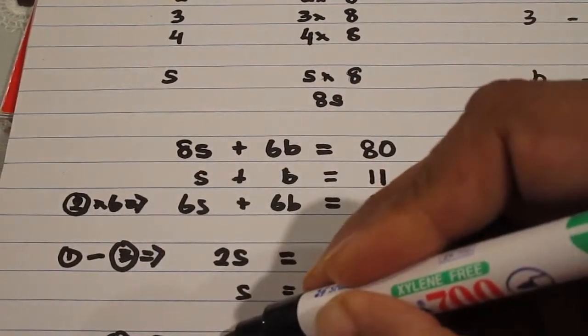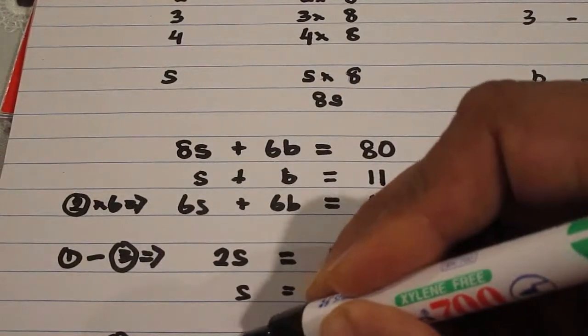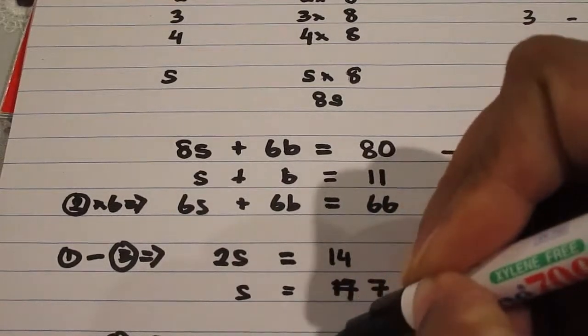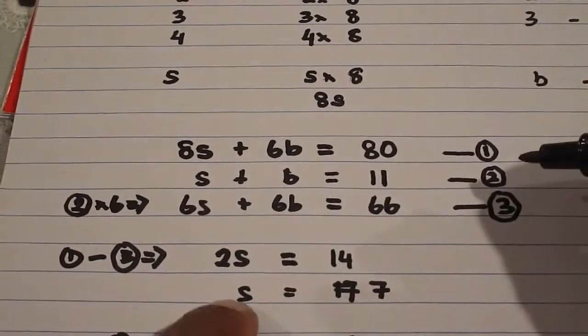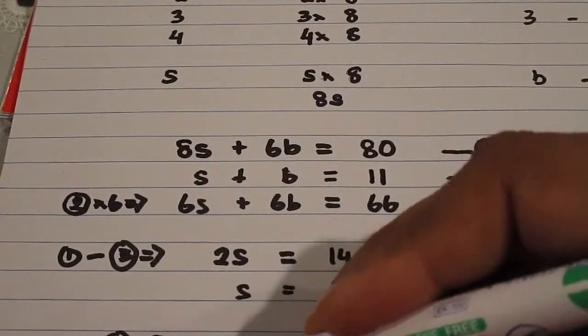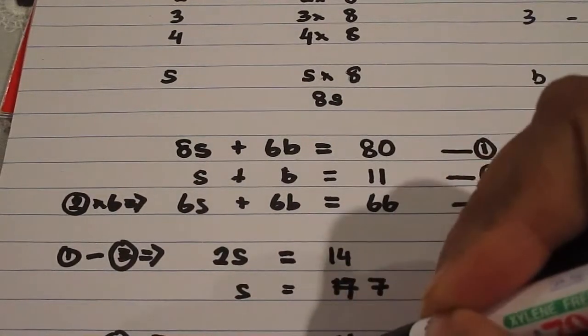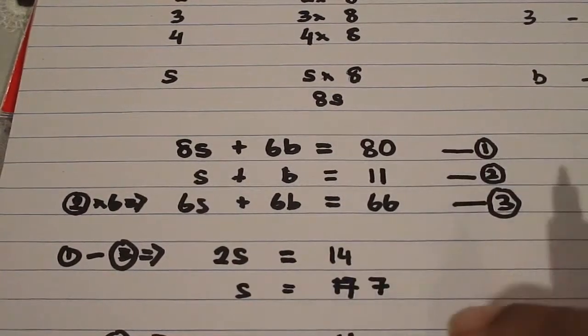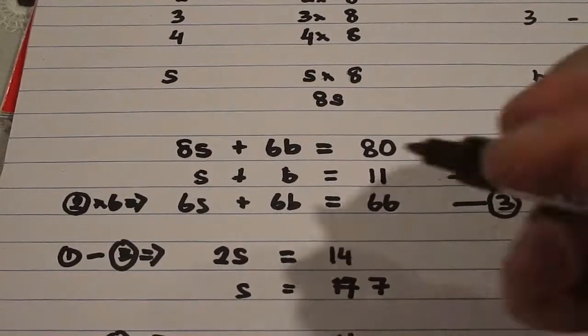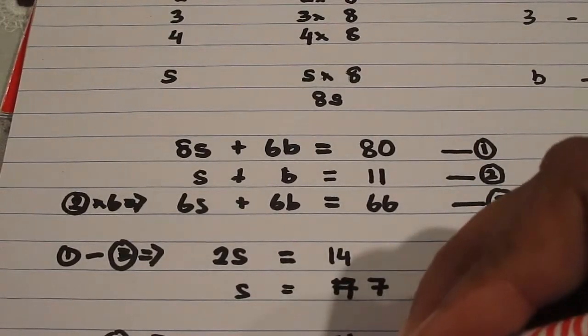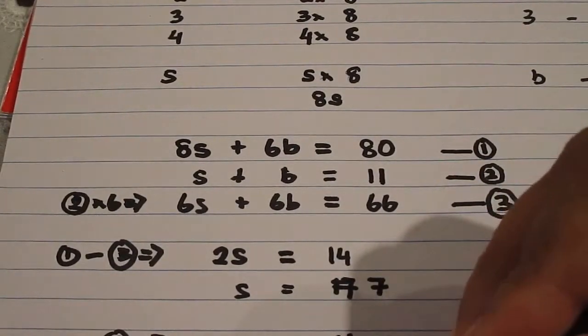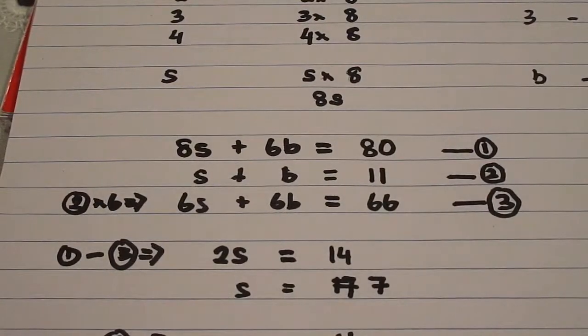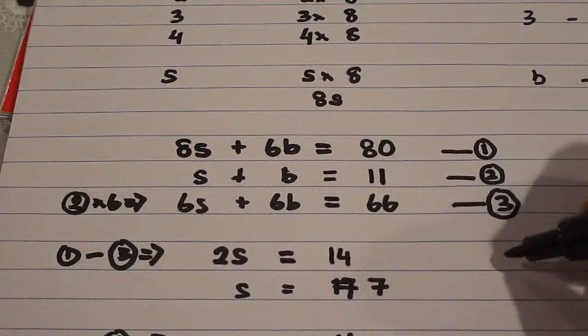And I have s plus b is equal to 11. Now s is 7, so 7 plus b is equal to 11. If I take 7 away from both sides, I will have b equals 11 minus 7, which is 4. So that gives us the number of bugs or insects.